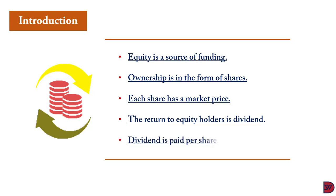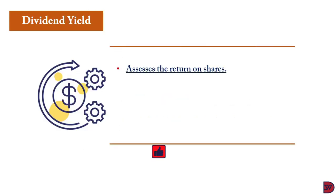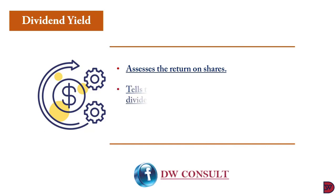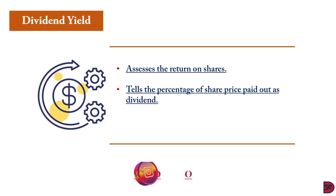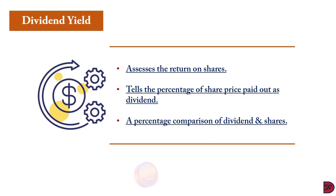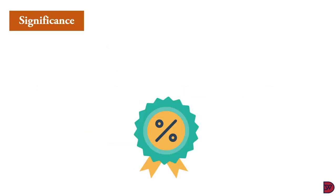The return to equity holders — what they will expect for their investment — is what we call a dividend, and this dividend is also paid per share. For example, a lady who owns a thousand shares: if the business declares a dividend of 50 cents per share, she will end up receiving 500 dollars — that is a thousand shares multiplied by the dividend per share. So when we talk about dividend yield, we are looking at the relationship between the amount an investor puts in and the return they are getting — the share price relative to the dividend paid out. If I bought a share for one dollar and I'm getting 50 cents back, that means 50% of the share price is coming back to me as dividend.